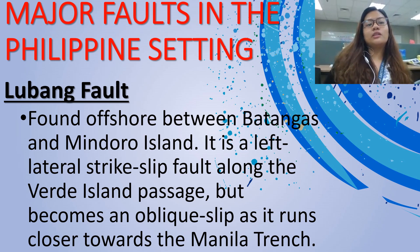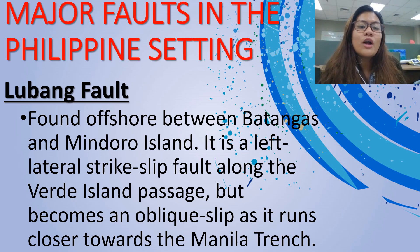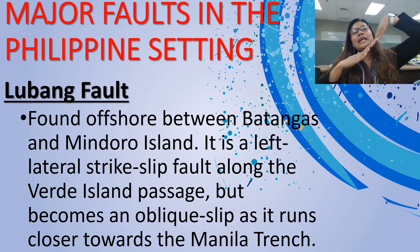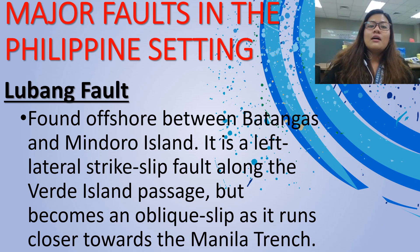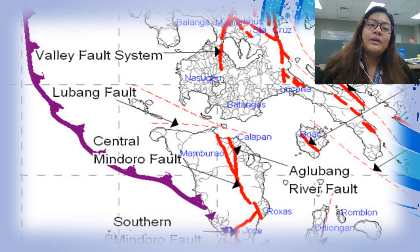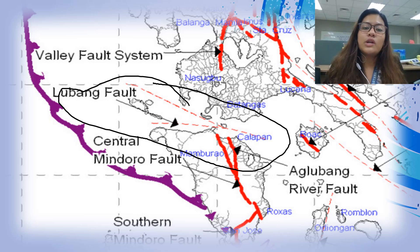Next is the Lubang Fault, found offshore between Batangas and Mindoro Island. In 2014, a magnitude 5 earthquake happened with the epicenter at Mindoro Island, and its intensity was felt all the way to Metro Manila. It is a lateral strike-slip fault along the Verde Island Passage, but becomes oblique as it turns closer towards the Manila Trench — possibly causing a tsunami if it reaches the Manila Trench. This is the picture of the Valley Fault System, and the Lubang Fault System is right here — Calapan, Mindoro; Mamburao; and Roxas.